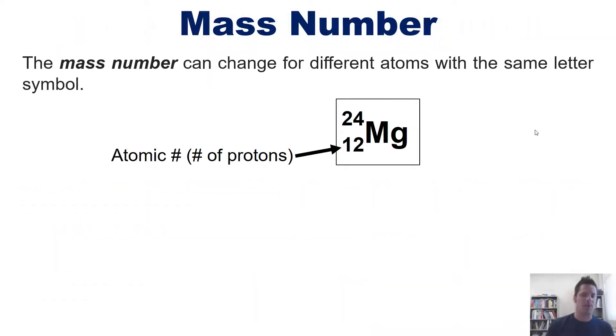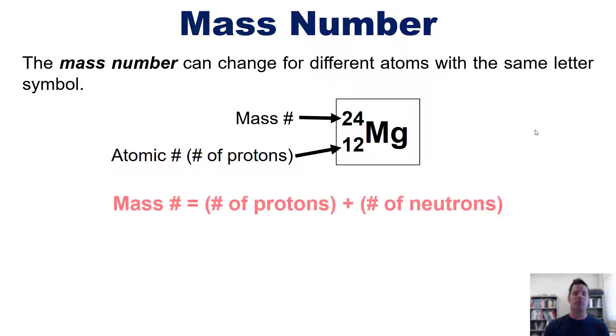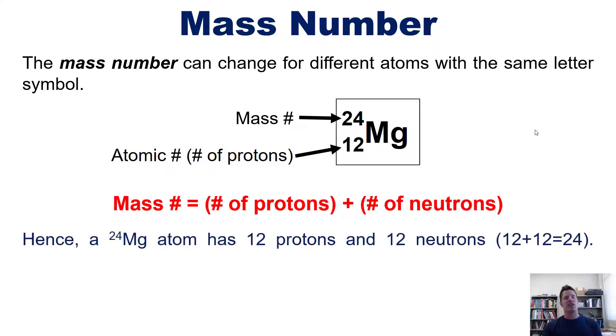The mass number, which in this depiction is the number 24 written here, can change for different atoms with the same letter symbol. The mass number is equal to the atom's number of protons plus its number of neutrons. Hence, a magnesium 24 atom has 12 protons and 12 neutrons, because 12 plus 12 is 24.